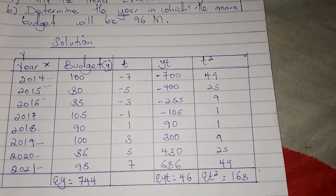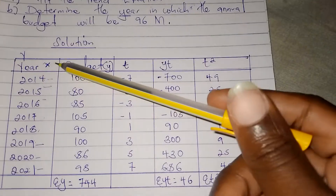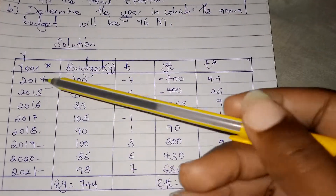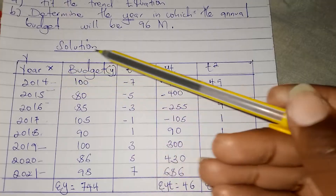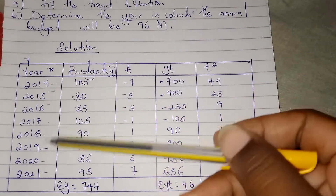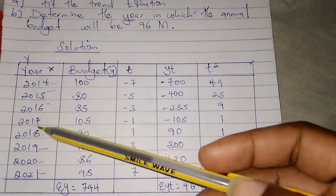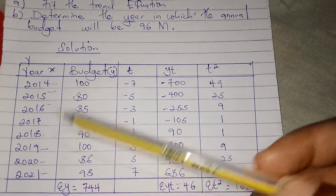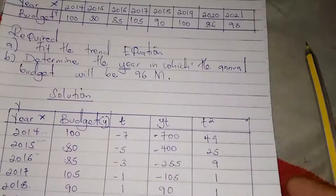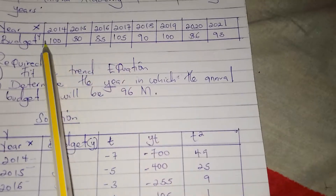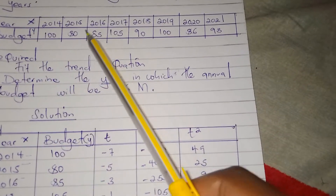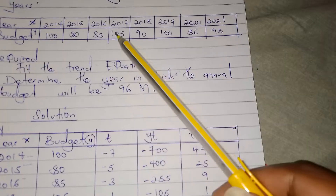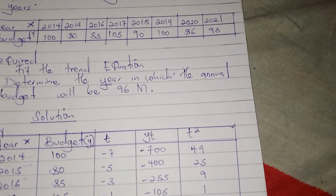For the solution, we shall first draw the table as usual. We have the column of X variables and Y variables — Y is the budget. The years go from 2014 to 2021, and the budget values we copy straight from the question: 100, 100, 80, 80, 85, 85, 100, 505, like that.